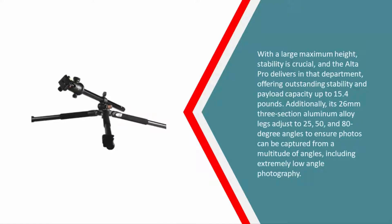The Alta Pro delivers in that department, offering outstanding stability and payload capacity up to 15.4 pounds. Additionally, its 26 millimeter three-section aluminum alloy legs adjust to 25, 50, and 80 degree angles to ensure photos can be captured from a multitude of angles, including extremely low angle photography.